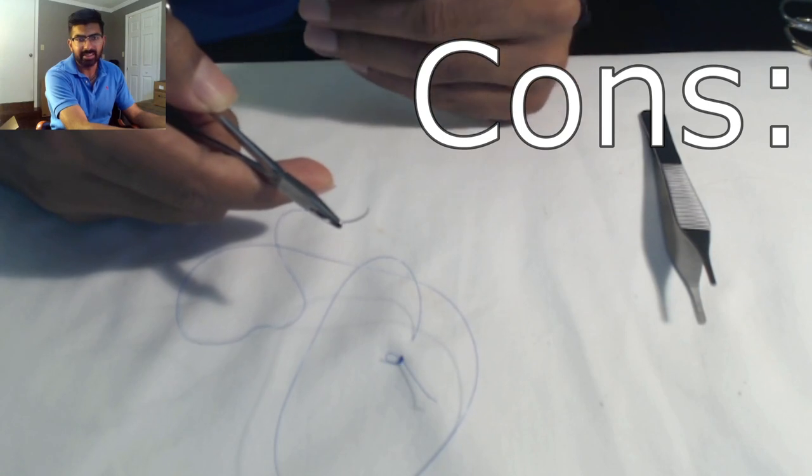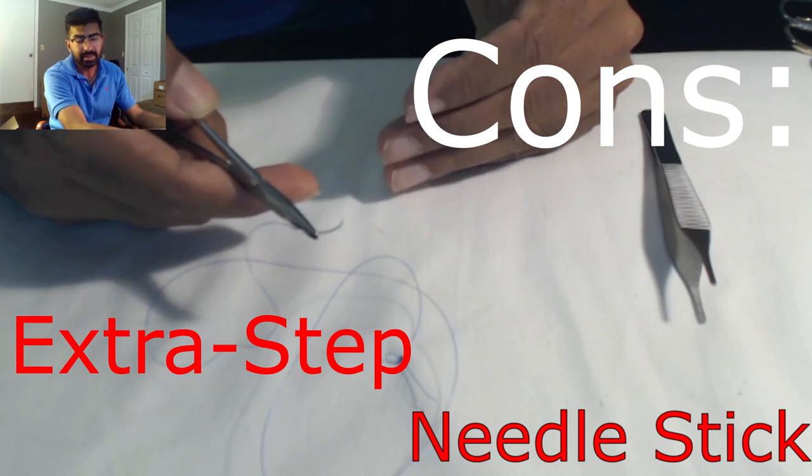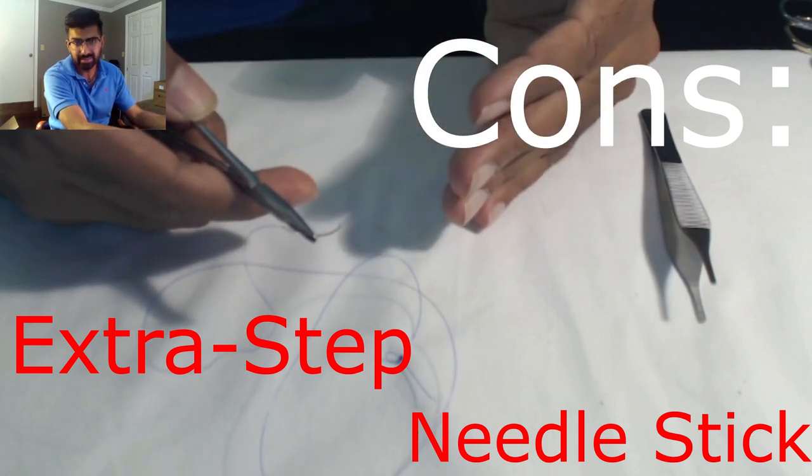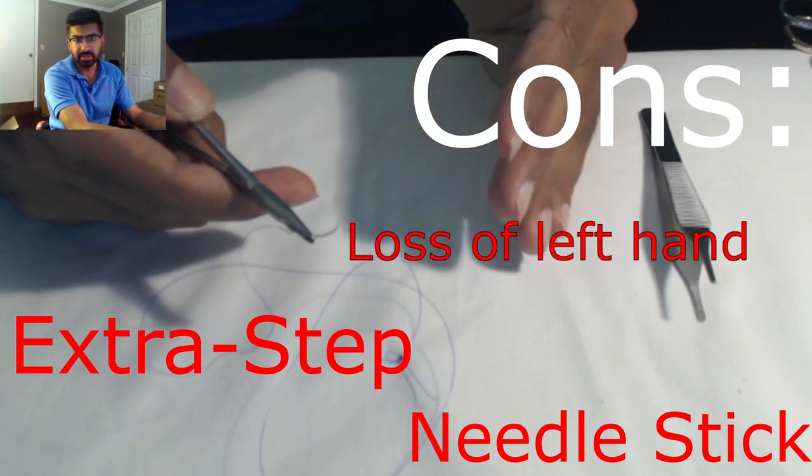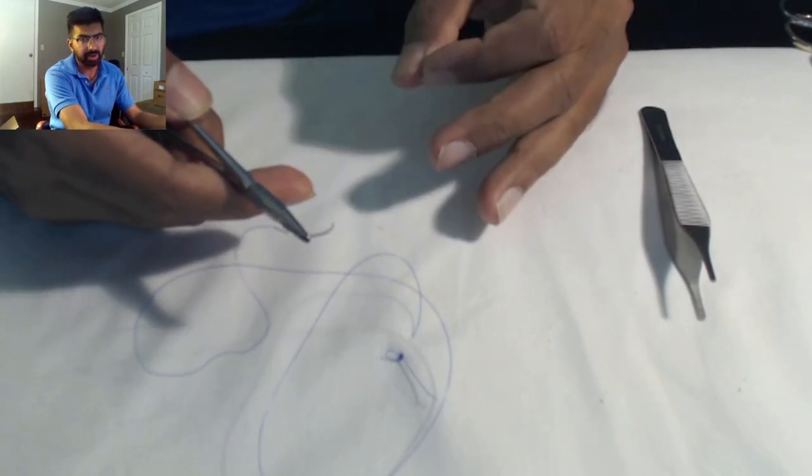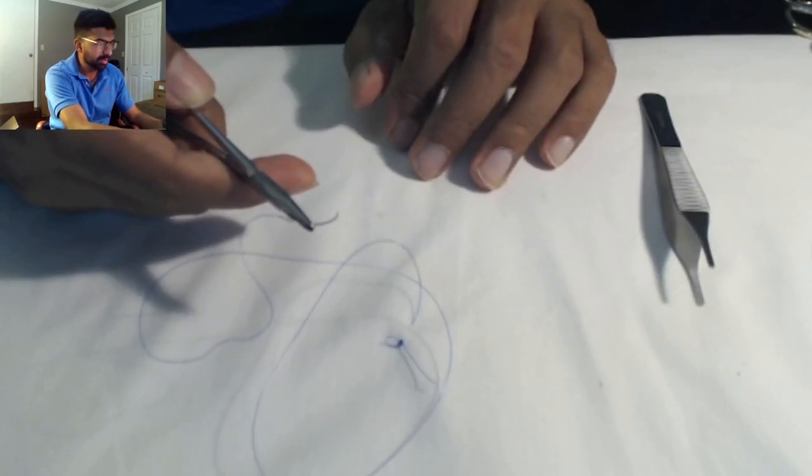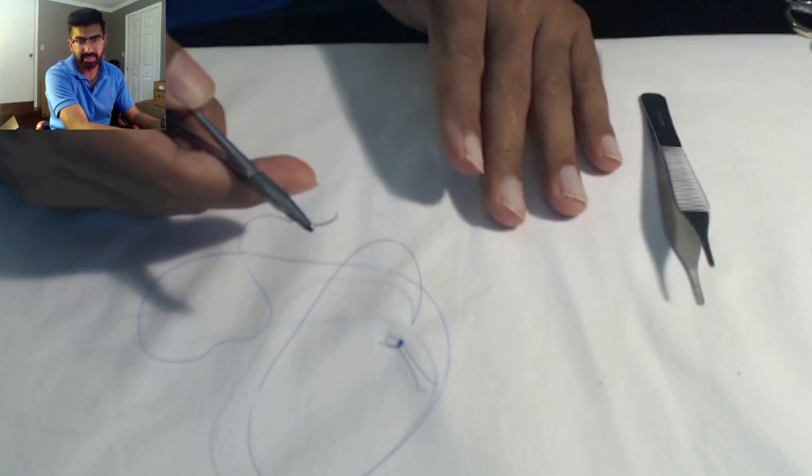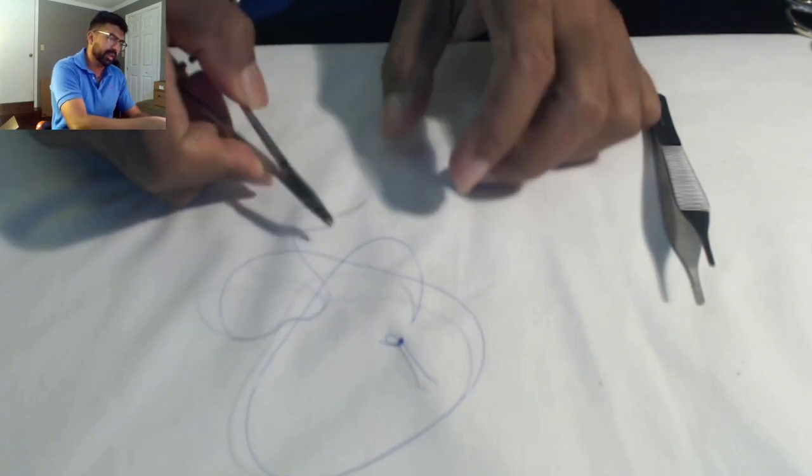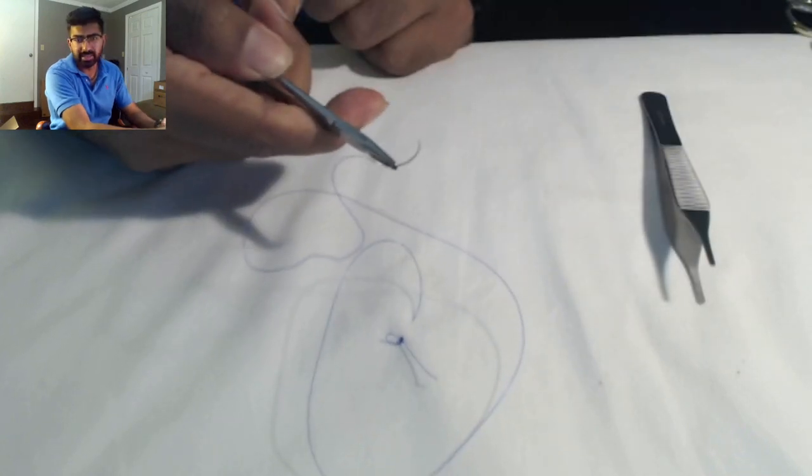The downside is it's an extra step. You're putting your hands in there, putting them at risk for injury. If you stick yourself, that's an infectious risk. If you were using your left hand for retraction or keeping tissue held, you lose that ability. But the big perk is you can get the needle set exactly where you want it. I see most medical students and interns doing this when they can't get the angle just right.